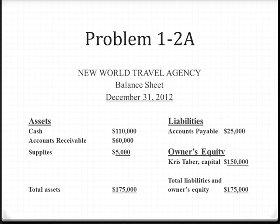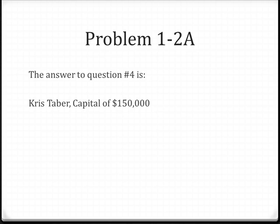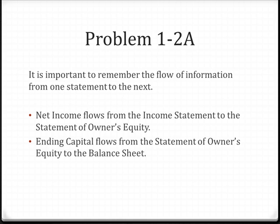Question number four wants to know what item appears on both the statement of owner's equity and the balance sheet. That particular answer is Chris Tabor Capital of $150,000 — the ending capital appears on the statement of owner's equity and feeds into the balance sheet. A couple of things to remember when building financial statements: net income flows from the income statement to the statement of owner's equity, and the ending capital flows from the statement of owner's equity to the balance sheet. This concludes Problem 1-2A.